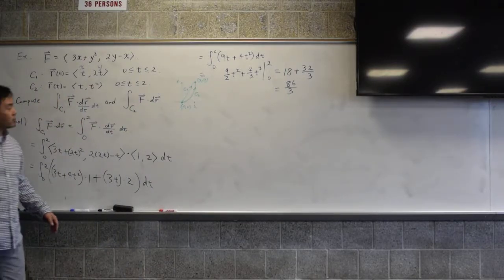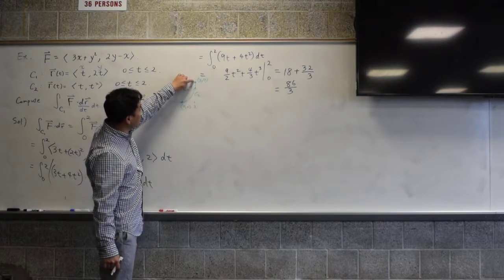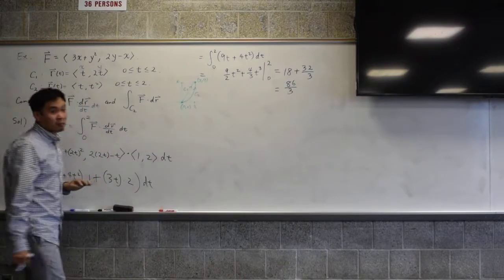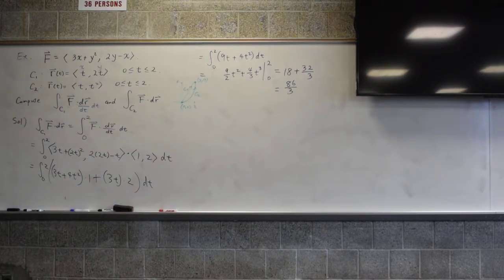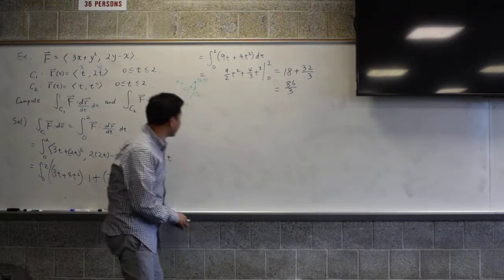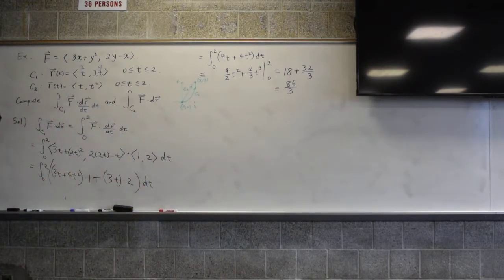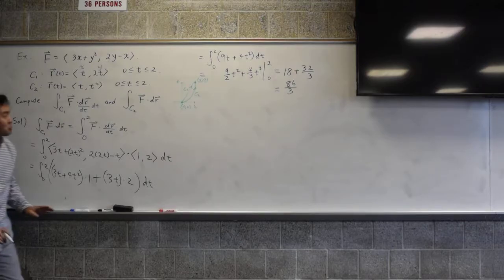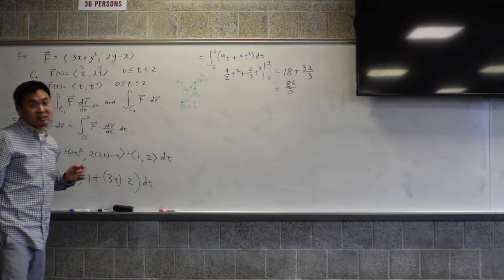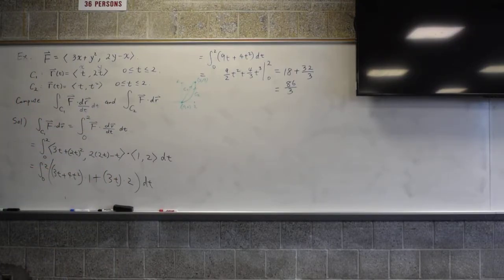By the way, if you integrate from (2, 4) to (0, 0) that way, then the integral will have the negative value. So let's try to do the second one. This question is asking, what if you took a different path from the first one? Would you get the same value or not?